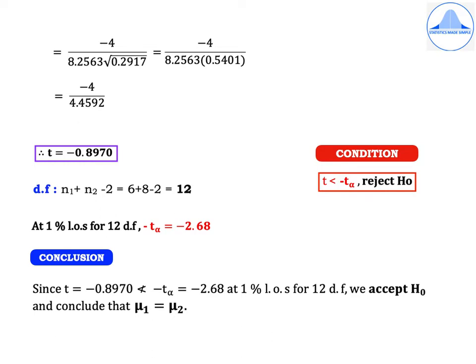This particular test is a left-tail test. The condition for a left-tail test is: reject H0 if T is less than minus T-alpha. The degrees of freedom is N1 + N2 − 2 = 6 + 8 − 2 = 12. At 1% level of significance for 12 degrees of freedom, minus T-alpha equals −2.68. Since T = −0.8970 is not less than −2.68, at 1% level of significance for 12 degrees of freedom, we accept H0 and conclude that mu1 is equal to mu2.